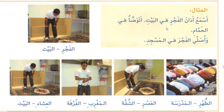Atawadda'u fil hamam — I make wudu in the bathroom. Wa usalli al-fajra fil masjid — and I pray the Fajr in the mosque. So this time you need to make the complete sentence using these two words: I hear the azaan of Fajr at home, I make wudu in the bathroom, and I pray in the mosque.